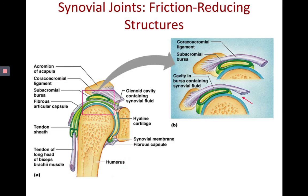Under the acromion we have the subacromial bursa, and there's a tendon sheath wrapping around a tendon in a similar area. Again, the tendon is like the hot dog if the tendon sheath is the bun. Both are fluid-filled with synovial fluid and are friction-reducing structures.